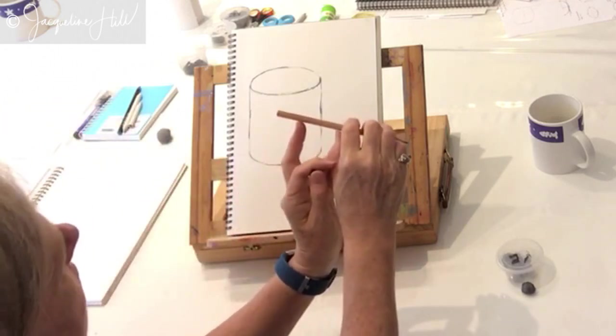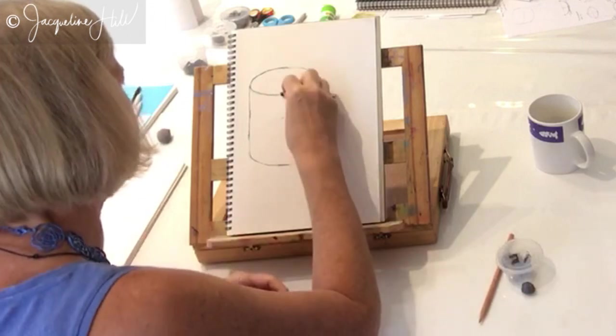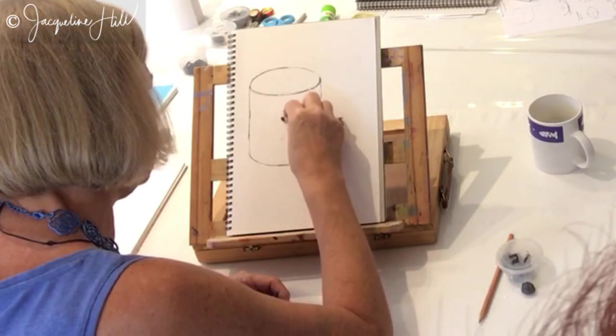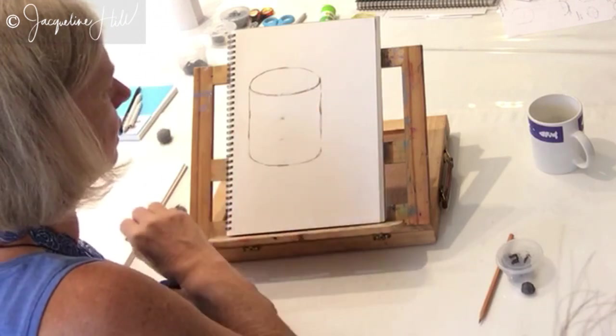So that looks like it's about a third again, doesn't it? So it's about a third of the way down from here down to here. Divide up into thirds. That's where the bottom of that label comes.